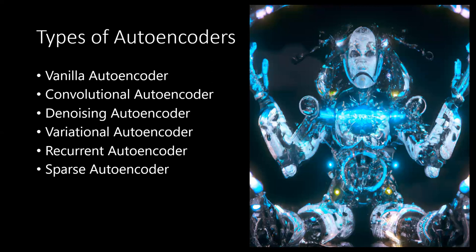The sixth type is the sparse autoencoder, which is trained to produce sparse representations of the input data. The idea is to force the model to learn a more compact representation, which can lead to better generalization and feature extraction. To summarize, the six types of autoencoders are: vanilla autoencoder, convolutional autoencoder, denoising autoencoder, variational autoencoder, recurrent autoencoder, and sparse autoencoder.